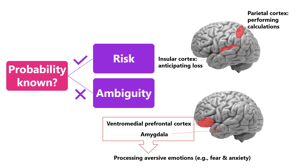This means your brain has one set of activities when you decide whether to adopt a new program that accounts for 5% of the budget in your organization, because you are unsure how effective the program will be. Your brain has another set of activities when you decide whether to have a surgery with an 87% success rate, or take medication with a 63% success rate, because your brain is processing known risks. Like humans, rhesus monkeys are also averse to ambiguity and prefer certainty, because rhesus monkeys and humans appear to share similar brain mechanisms of decision-making.